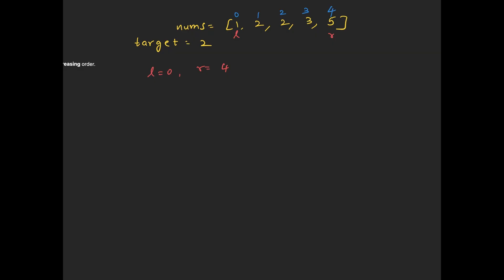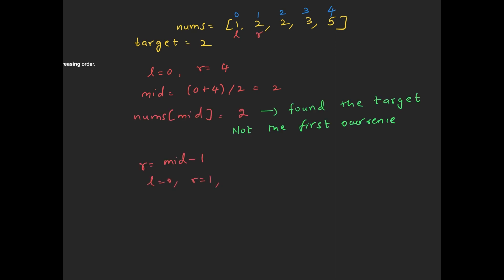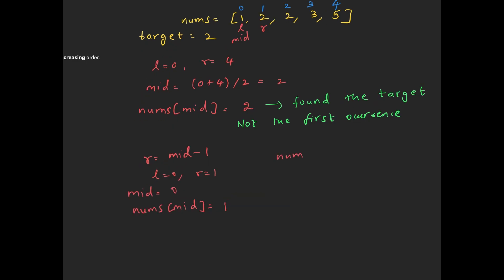First we define our left and right pointers. The left pointer is at index 0 and the right pointer is at the last index of the array. We calculate the mid index, which is 2, and the value at mid is also 2. We have found the target, however we need to ensure that this is the first occurrence. To do that, we shift the right pointer to mid minus 1. Now the left pointer is still at index 0 and the right pointer has moved to index 1. We calculate the mid again, which is now 0, and the value at mid is 1. Since 1 is less than the target 2, we shift the left pointer to mid plus 1, which is index 1, and continue our search for the first occurrence of the target.